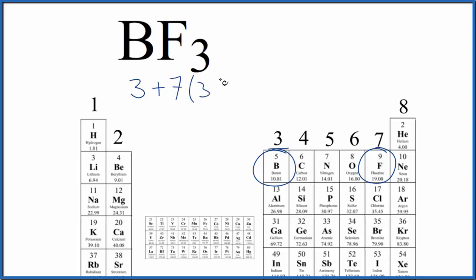We have three fluorine atoms. So 3 plus 21, 24 total valence electrons for the BF3 Lewis structure.